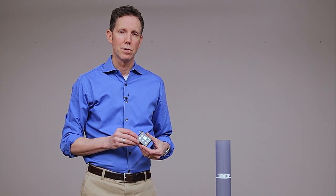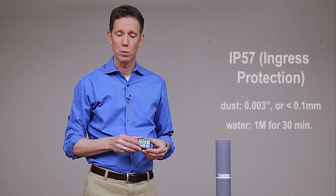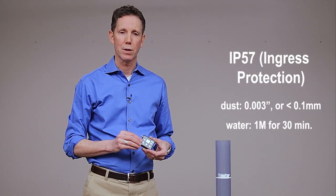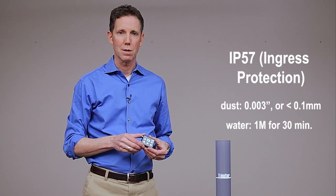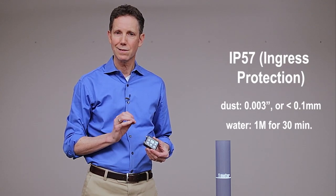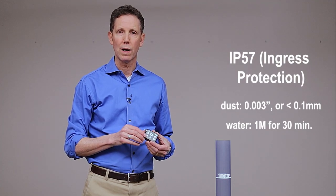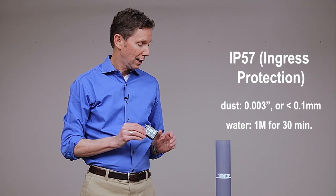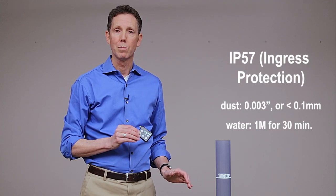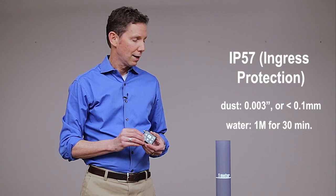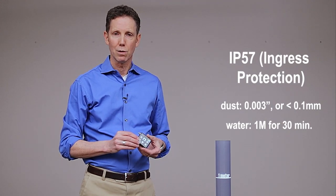One of the key features of this unit is the IP57 rating for moisture resistance. IP stands for ingress protection and 57 tells us that it has resistance to dust down to a certain size as well as moisture ingress. It can be submerged for up to 30 minutes or more under a meter of water and still function perfectly.